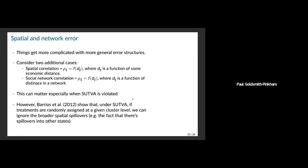This can especially matter when SUTVA is violated, because that's going to create this kind of propagation of correlation. When you have SUTVA though, and you're thinking about random treatment and what you're worried about is this correlation, there's a Barrios et al. paper in JASA 2012 showing that under SUTVA, if you have treatments randomly assigned at a given cluster level — even if there are broader spatial spillovers — you can still make progress. An example from their paper: consider U.S. states, where some states have high minimum wage laws and some have low, and we're interested in the effect on income.